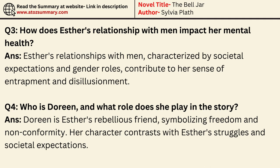How does Esther's relationship with men impact her mental health? Esther's relationships with men, characterized by societal expectations and gender roles, contribute to her sense of entrapment and disillusionment. Who is Doreen, and what role does she play in the story? Doreen is Esther's rebellious friend, symbolizing freedom and non-conformity. Her character contrasts with Esther's struggles and societal expectations.